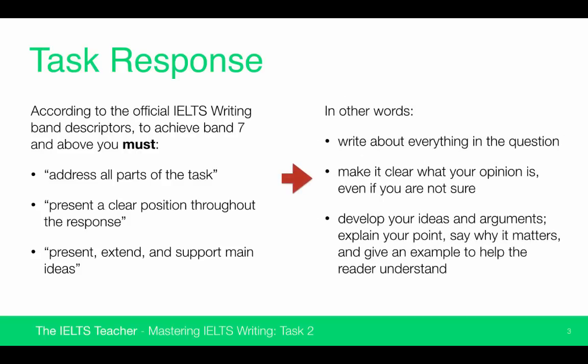In other words, you need to write about everything in the question — try not to leave any parts of the task unaddressed. You also need to make it very clear what your opinion is, even if your opinion is that you are not sure whether you agree or disagree. You might write something like: 'Personally, while I do agree with this side of the argument, I also have some sympathy with the other side.' Bear in mind that if you have a discussion question which doesn't ask for your opinion, then you do not need to give your opinion.